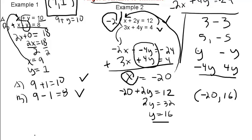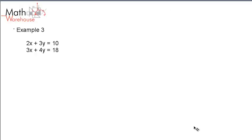Let's look at the hardest example we're going to look at today. Example 3: 2x plus 3y equals 10, 3x plus 4y equals 18. Remember, step one is to target a variable.